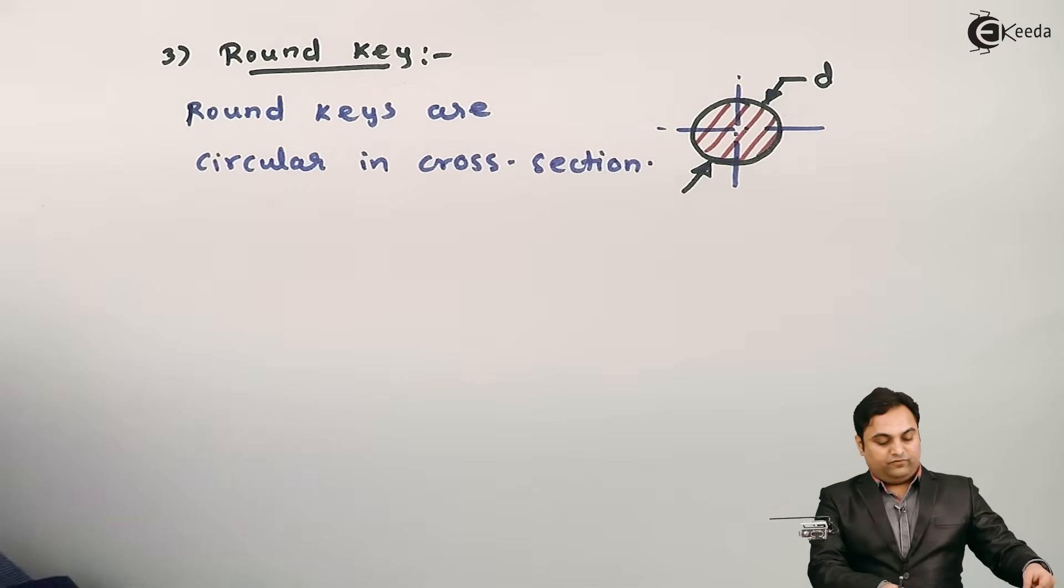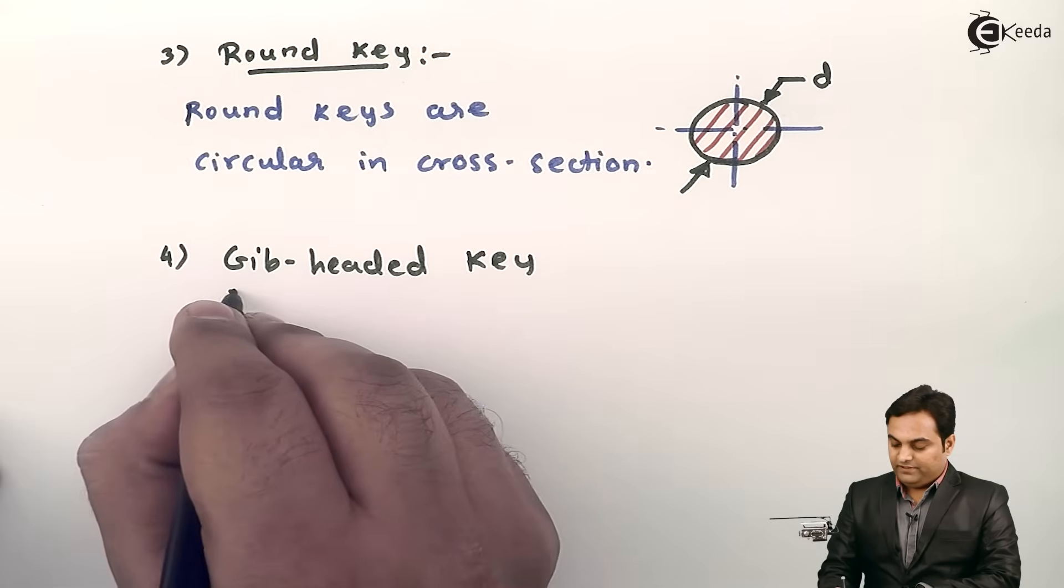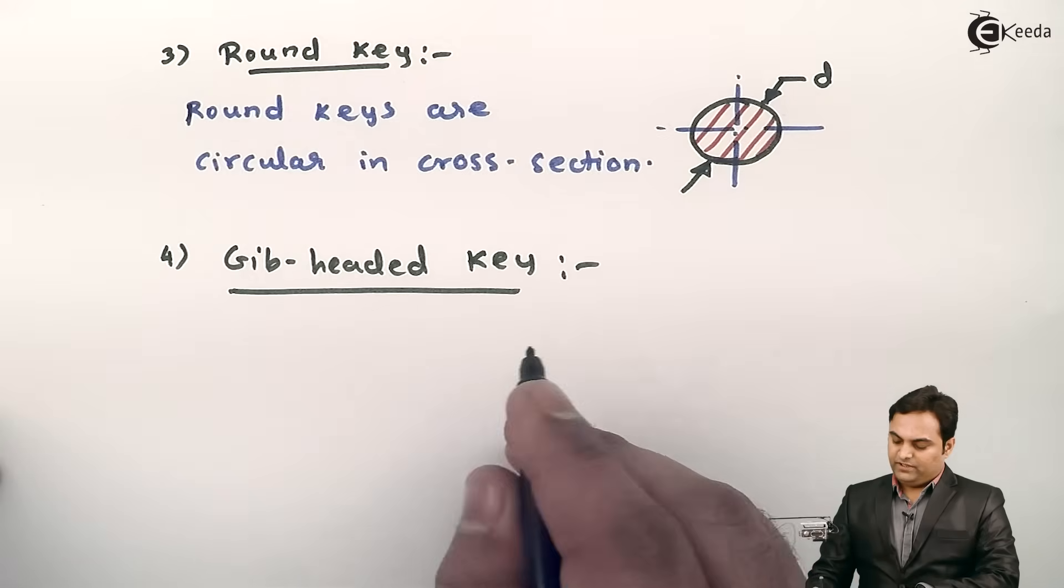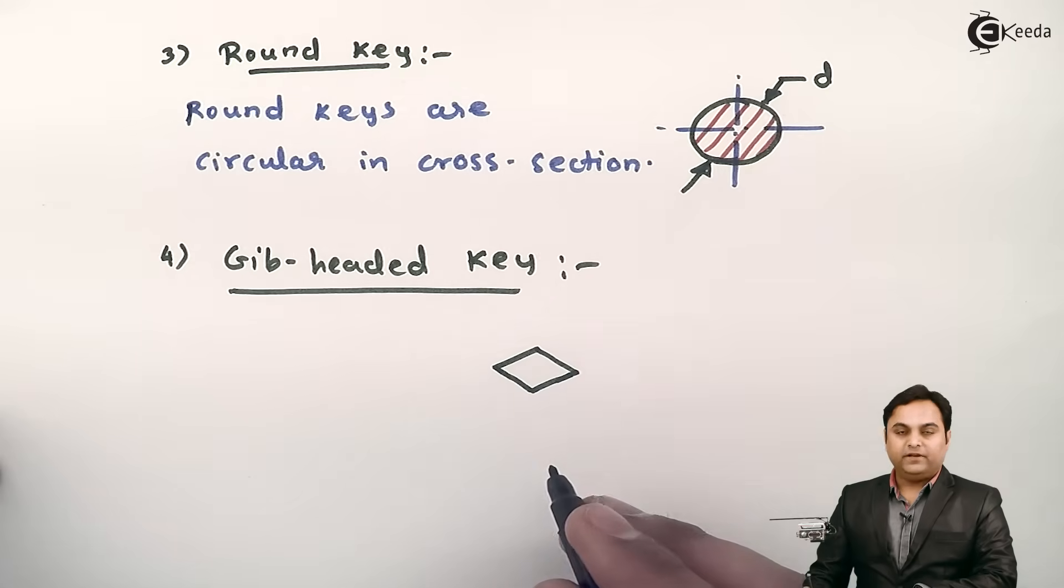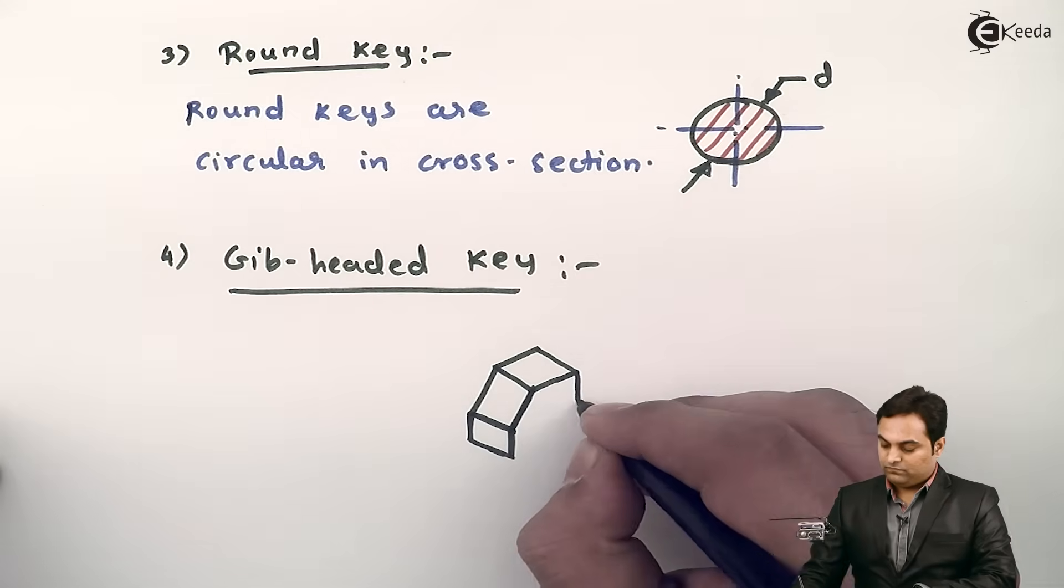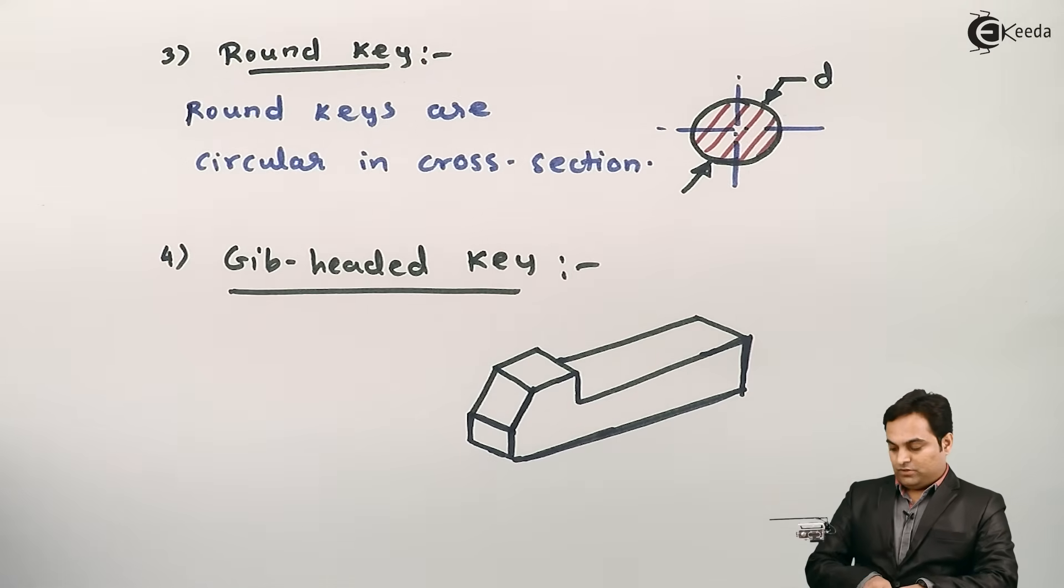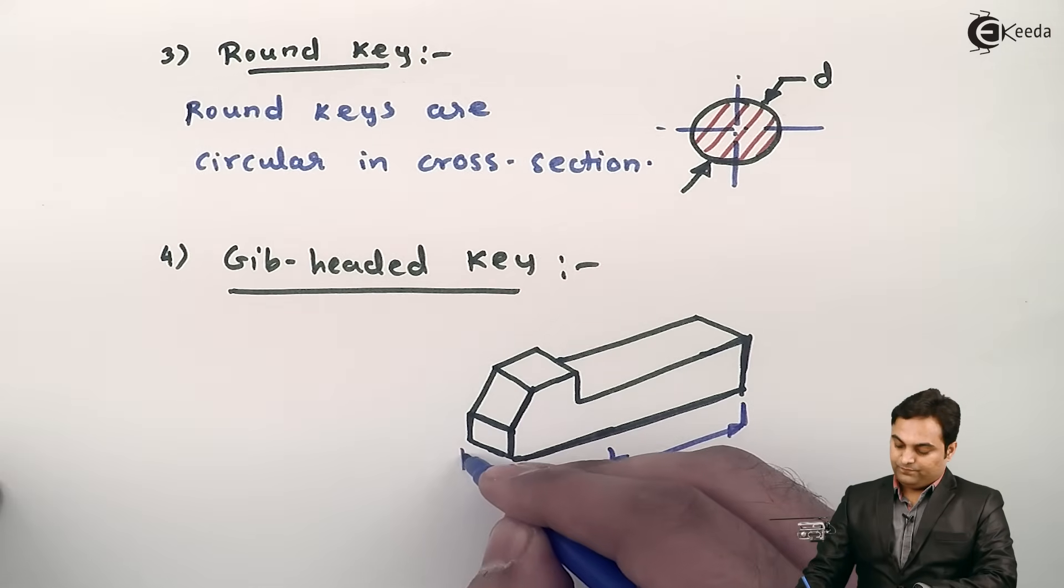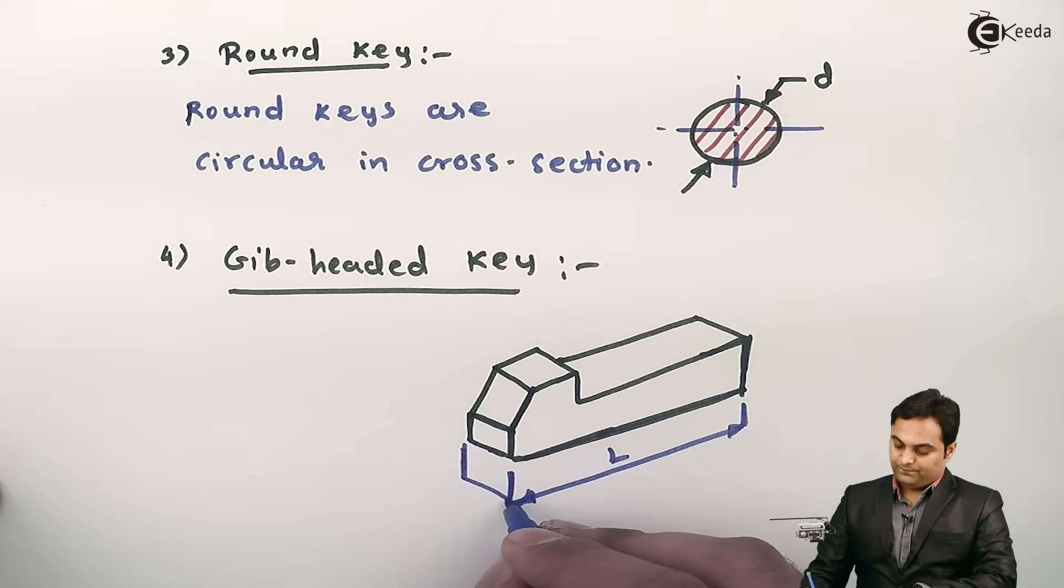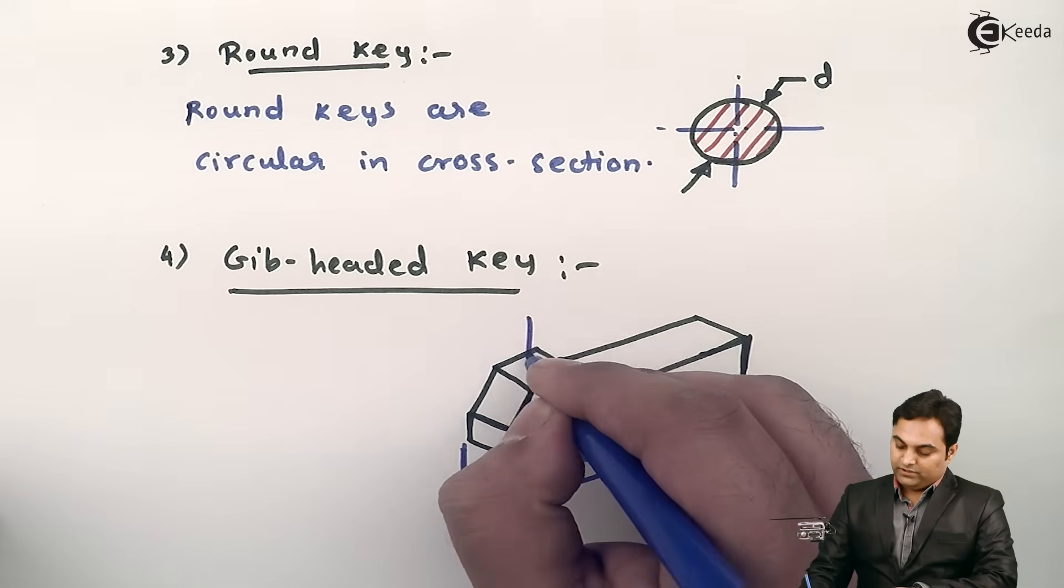Next we have the fourth one, that is gib-headed key. In gib-headed key, the shape of the key is somewhat different. Here I'll draw it in a 3D diagram to explain it in a better way. Here I have drawn the diagram of a gib-headed key. This much would be the length of the key, and here we have the width of the key.